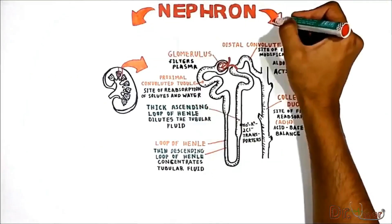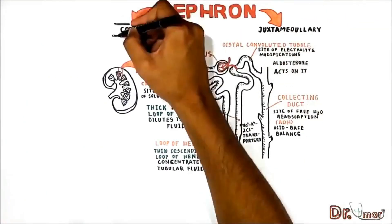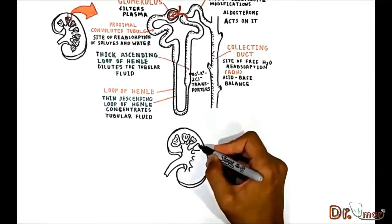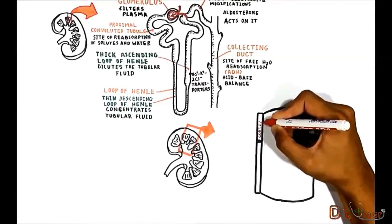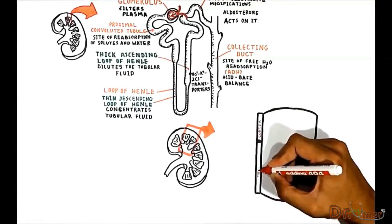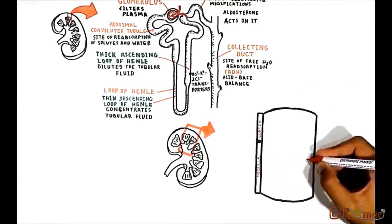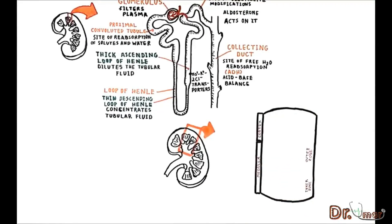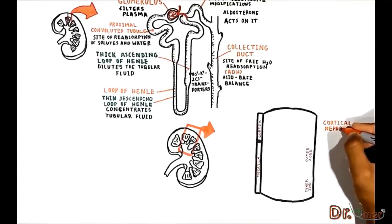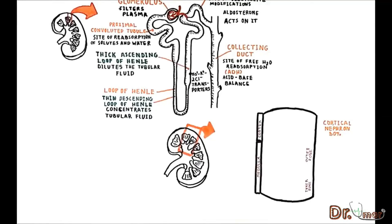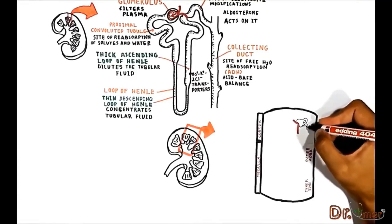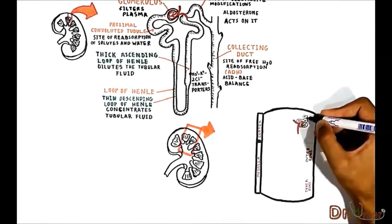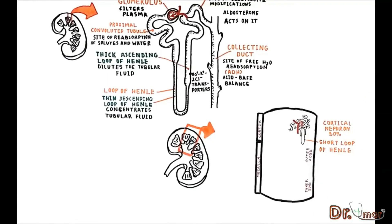There are two populations of nephrons: cortical and juxtamedullary. Looking inside the kidney, you will see it has an outer region, the renal cortex, and an inner region, the renal medulla, which is composed of an outer zone and an inner zone. Approximately 80% of all nephrons are cortical nephrons. The cortical nephrons originate from glomeruli in the upper and middle regions of the cortex, and their loops of Henle are short, extending only to the inner stripe of the outer medulla.